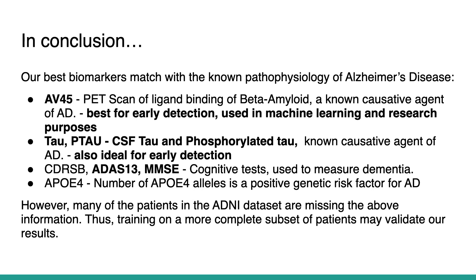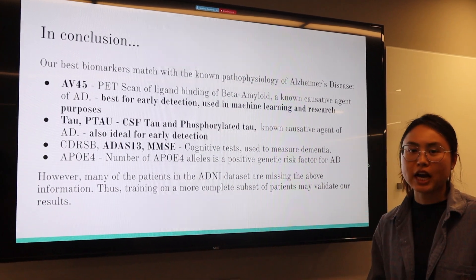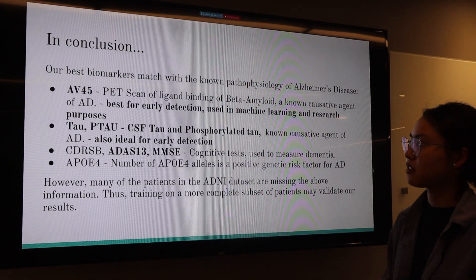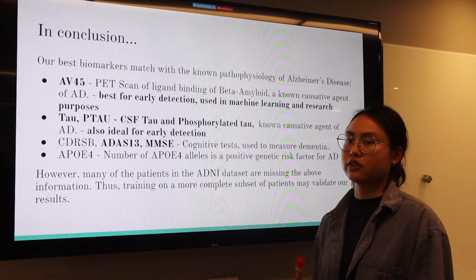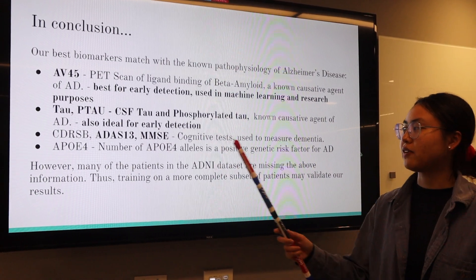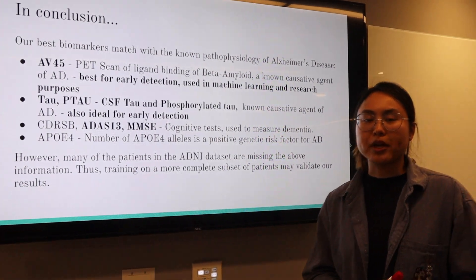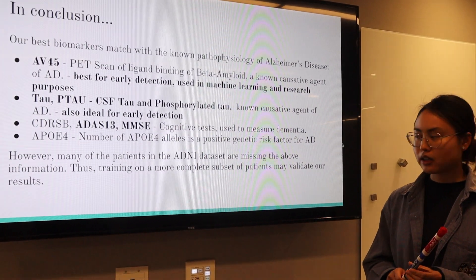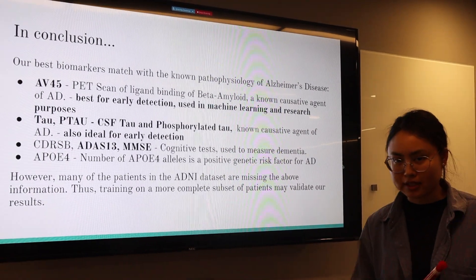In conclusion, the best biomarkers matching the known pathophysiology of Alzheimer's disease are: for molecular biomarkers, AV45 (beta-amyloid) and tau, which are best used for early detection and potentially for machine learning or research purposes. For cognitive tests, CDR-SB, ADAS13, and MMSE — while MMSE is the clinical standard, we found that ADAS13 is a highly correlated variable for Alzheimer's disease detection. We note that some patient data was missing from the ADNI dataset, which could contribute variation or error. Moving forward, we would like to train on a more complete subset of patients for more comprehensive results. We thank our professors for making this project possible.